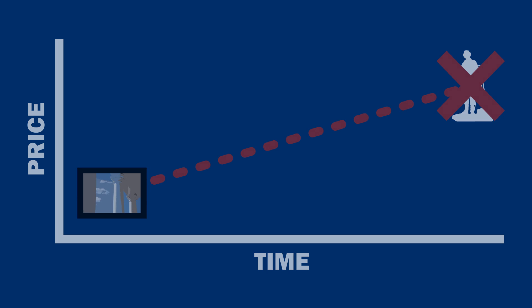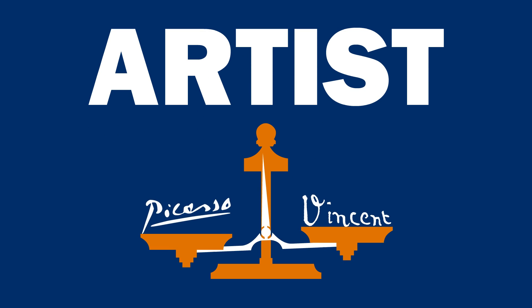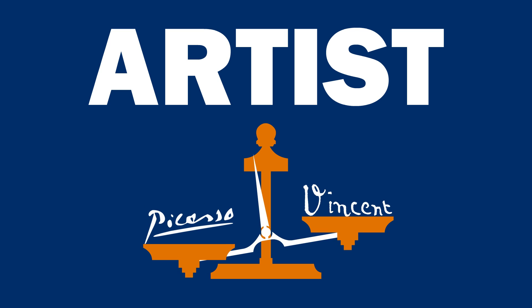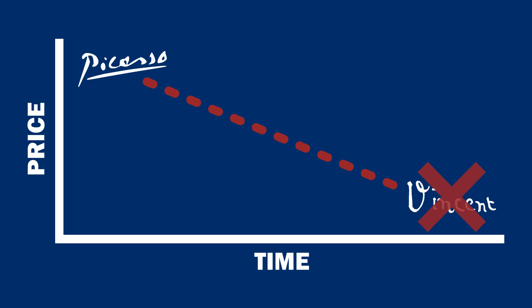In addition to the medium, the artist is unique as well. If demand for pieces of Picasso is greater than pieces by Vincent van Gogh, it will affect the price. And as a result, we wouldn't want to use the purchase price of a Picasso in one year and the sale price of a van Gogh in another year to calculate the return.